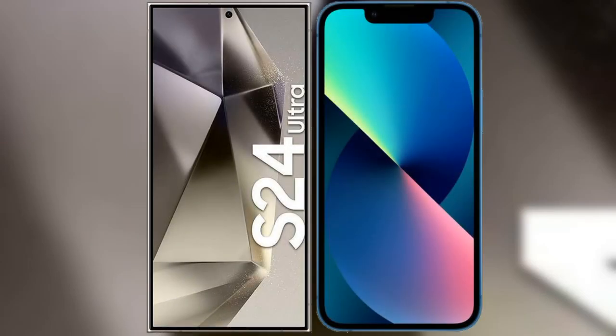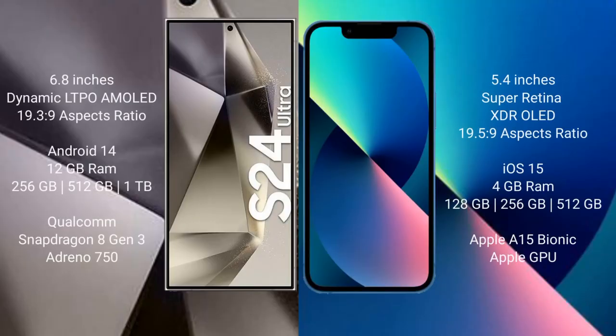I will compare the new Samsung Galaxy S24 Ultra with iPhone 13 mini. Samsung Galaxy S24 Ultra comes with a 6.8 inch Dynamic LTPO AMOLED display and aspect ratio 19.5:9. iPhone 13 mini comes with a 5.4 inch Super Retina XDR OLED display and aspect ratio 19.5:9.